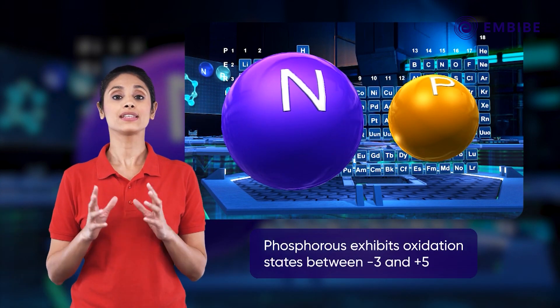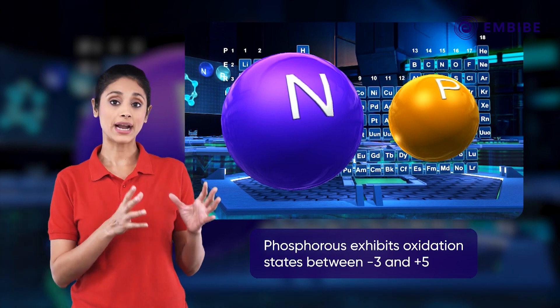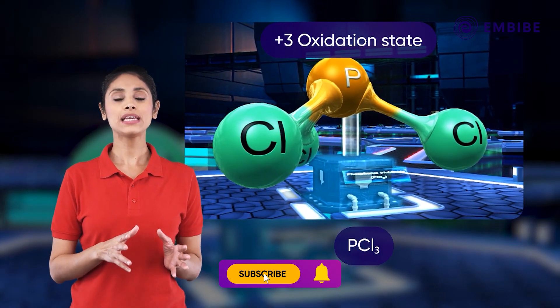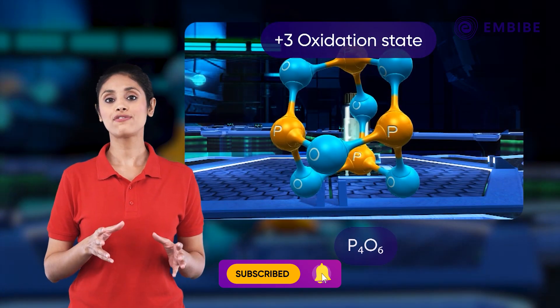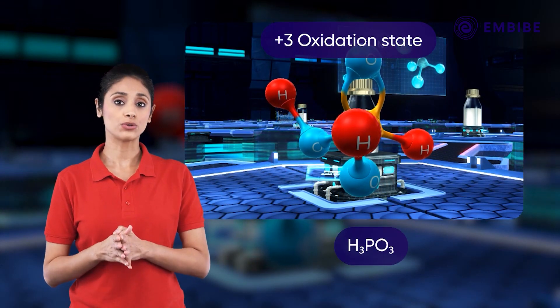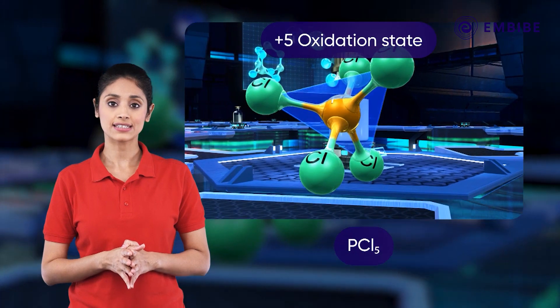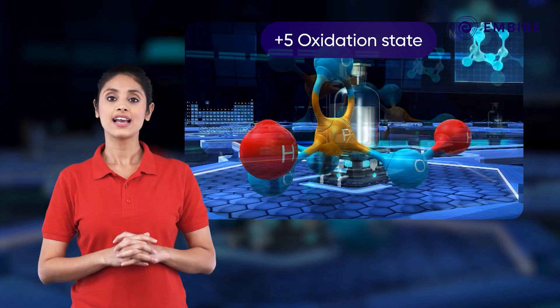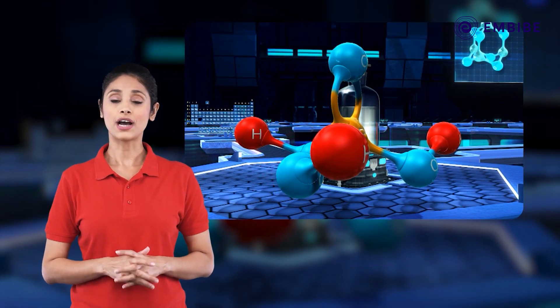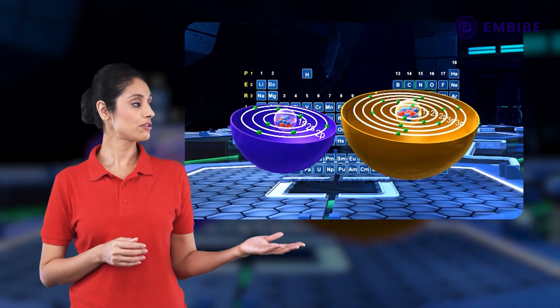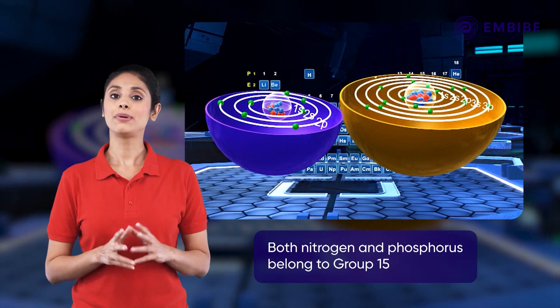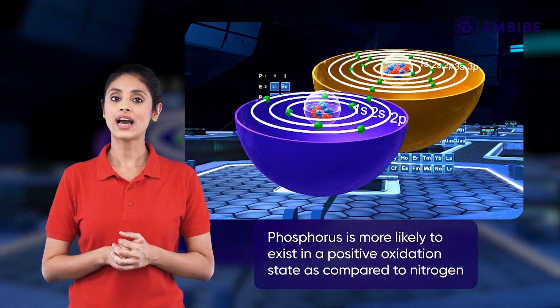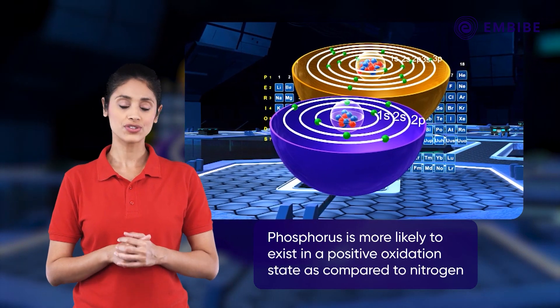Like nitrogen, phosphorus forms compounds where it has all oxidation states between -3 and +5. The +3 state, as in PCl3, P4O6, and H3PO3, and the +5 state, as in PCl5, P4O10, and H3PO4, are the most important. Both nitrogen and phosphorus belong to Group 15, but as compared to nitrogen, phosphorus is more likely to exist in a positive oxidation state.